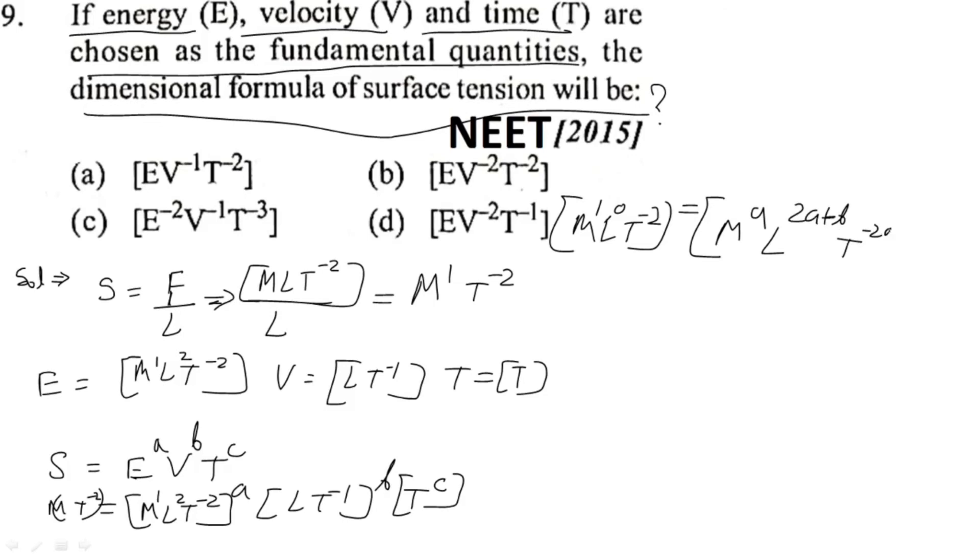Now equating all the powers, we can have the equations: a equals 1, 2a plus b equals 0, and minus 2a minus b plus c equals minus 2.